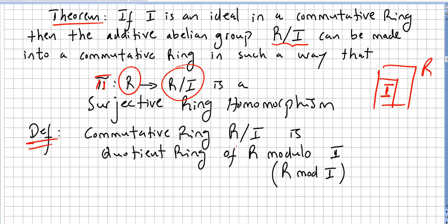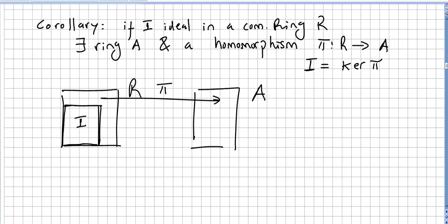Now let me give you a quick corollary of the previous theorem. If I is an ideal in a commutative ring R, there is a ring A and a homomorphism pi taken from R to A.